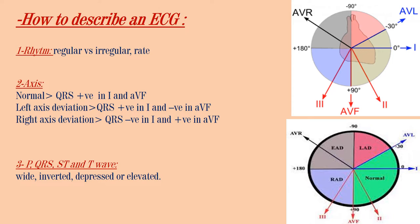The axis shows the average direction of spread of depolarization of the ventricles, which is represented by the QRS complex. Normally, the normal axis of the heart is between minus 30 degrees to plus 90 degrees. The QRS complex is positive in both lead 1 and lead aVF. In left axis deviation, QRS is positive in lead 1 and negative in aVF. In right axis deviation, the QRS is negative in lead 1 and positive in aVF.